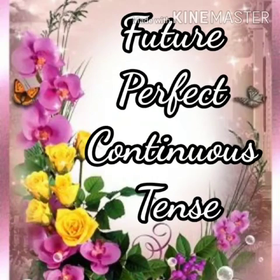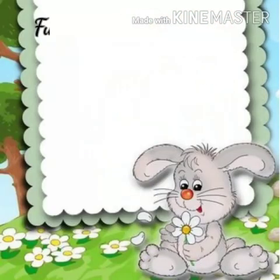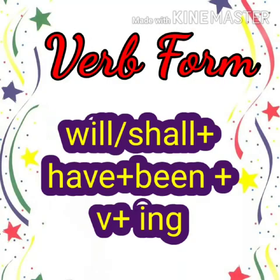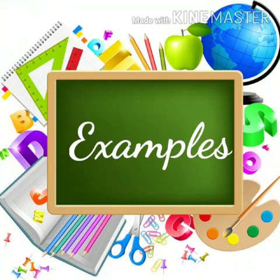We shall see future perfect continuous tense now. It is used to denote an action that will be completed and will continue in the future for a long time. To denote such an action we use future perfect continuous tense. The verb form for future perfect continuous tense is will or shall plus have plus been plus verb plus ing.